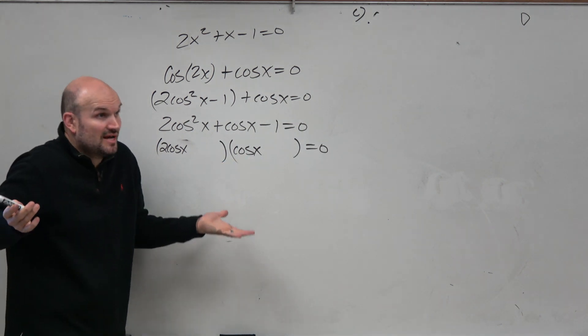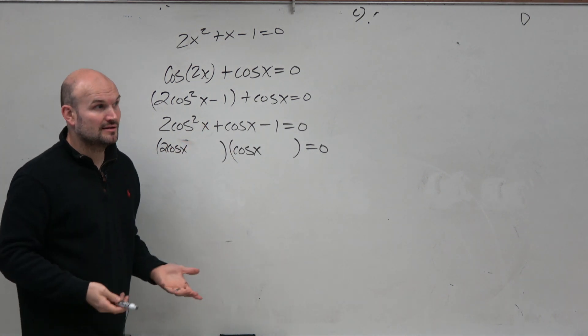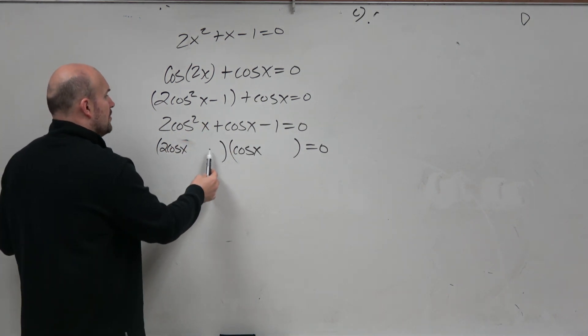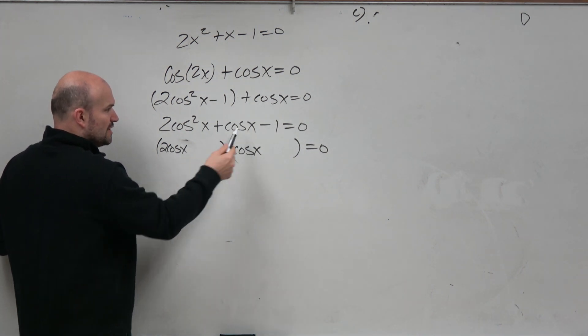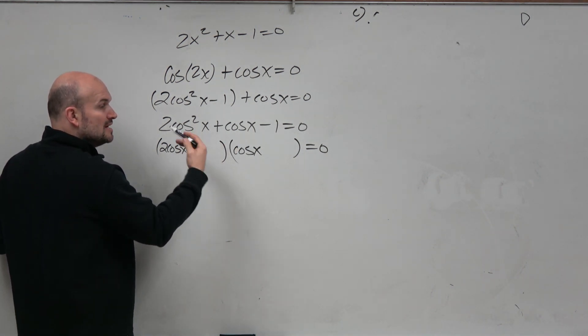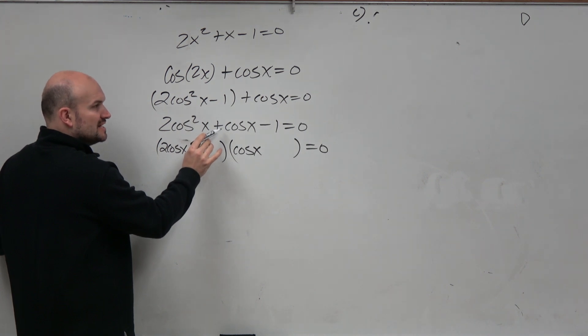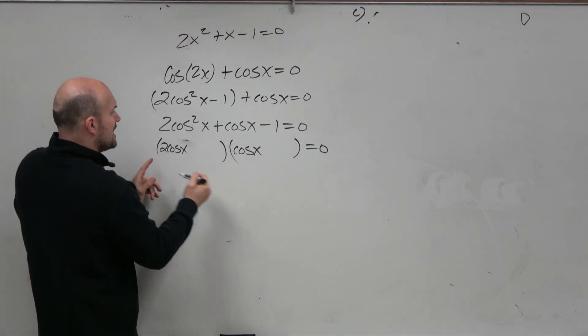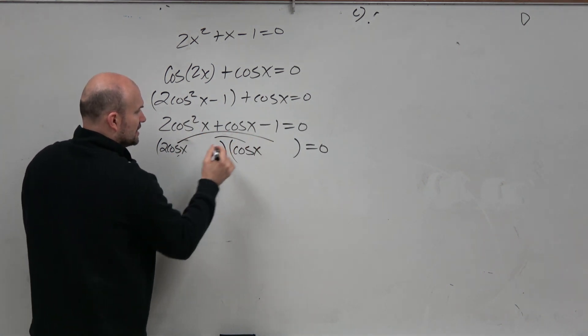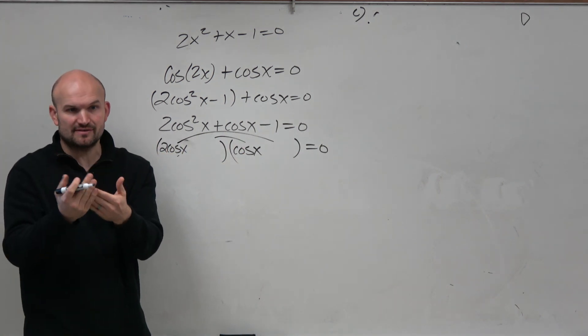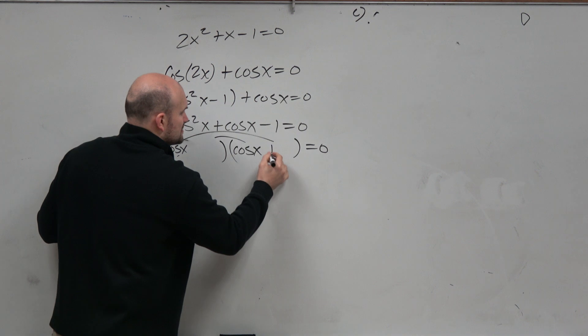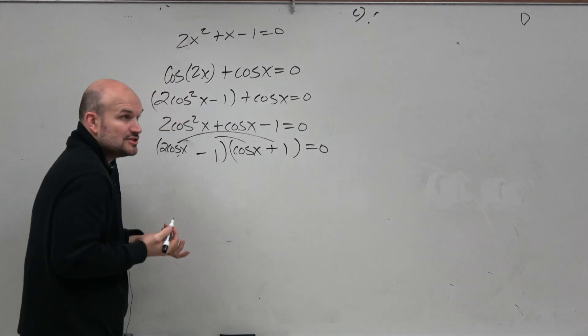Worst comes to worst, just guess. But we can be smart about this. Since the middle term is positive, we want the larger of our two products—outer and inner—to be positive because you're going to combine terms. That's why that's positive and that's negative.